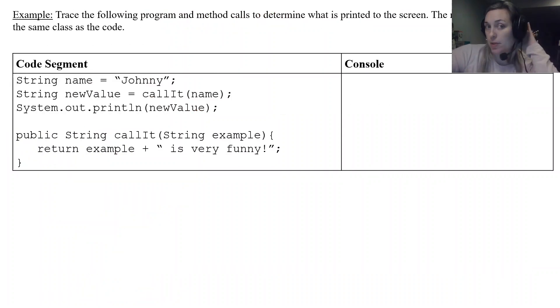Here's another example. Okay we're going to trace through the following program and the method call to determine what is printed to the screen. Okay so we're just again just kind of assume that this code segment in the method is in the same class and we're just going to call it an object creating class. So there's no static keyword here. So string name equals Johnny. Okay so name is going to have the value Johnny.